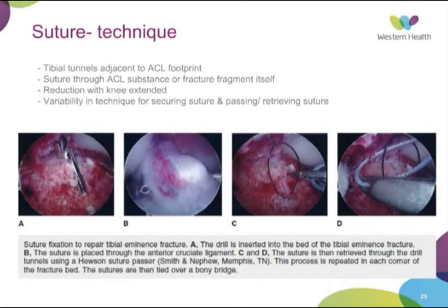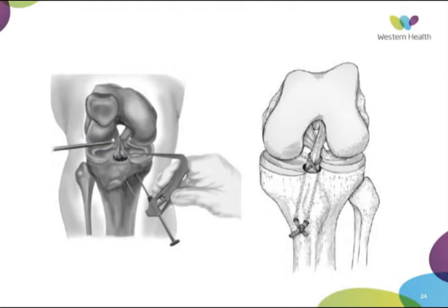The knee is reduced with the knee fully extended to achieve good tension. It is then tied around a bone bridge at the front of the anterior tibia. There is variability in technique for securing and passing the sutures. Generally there is one tunnel on the medial and one on the lateral side of the ACL footprint, passed in a figure-of-eight configuration and tied over a bone bridge at the front of the anterior tibia.